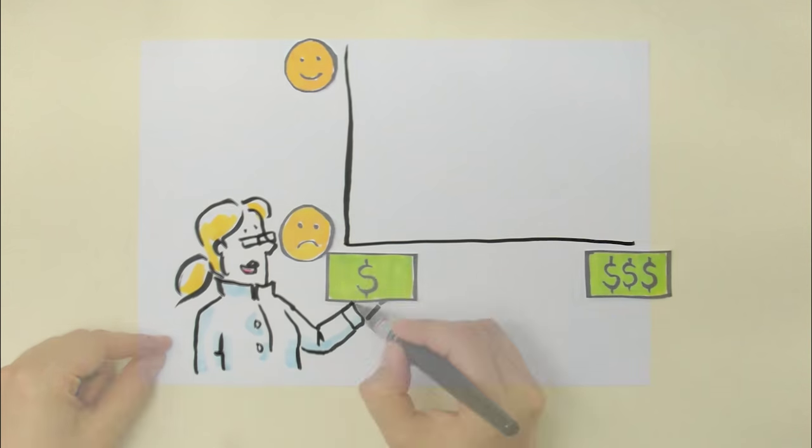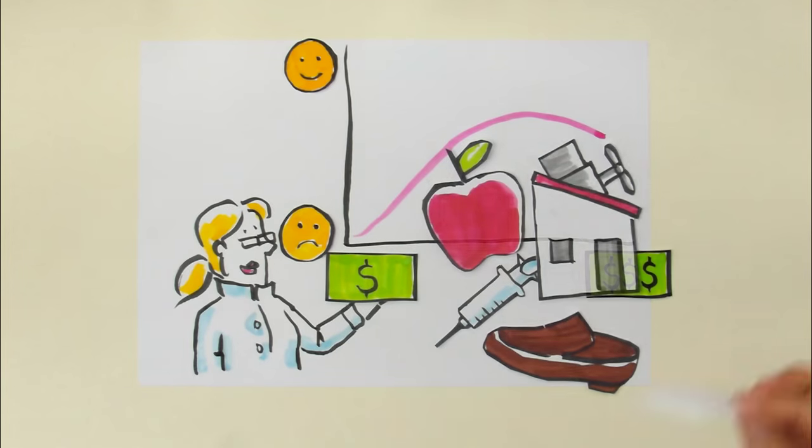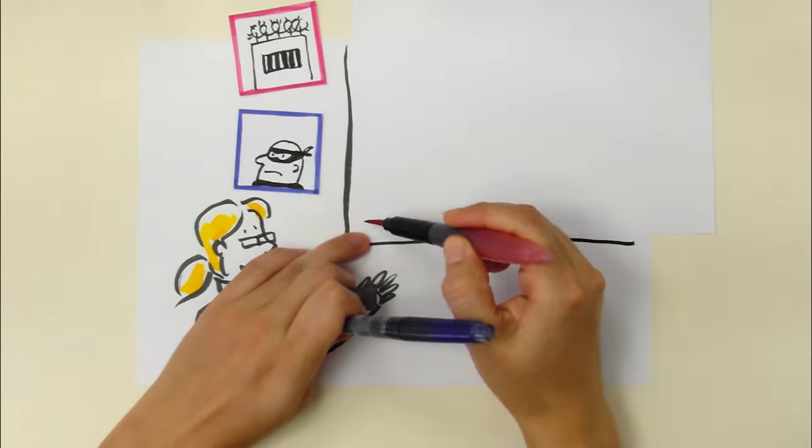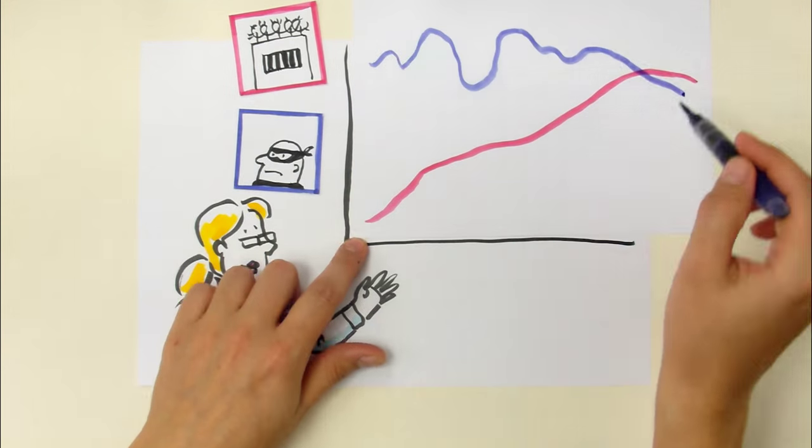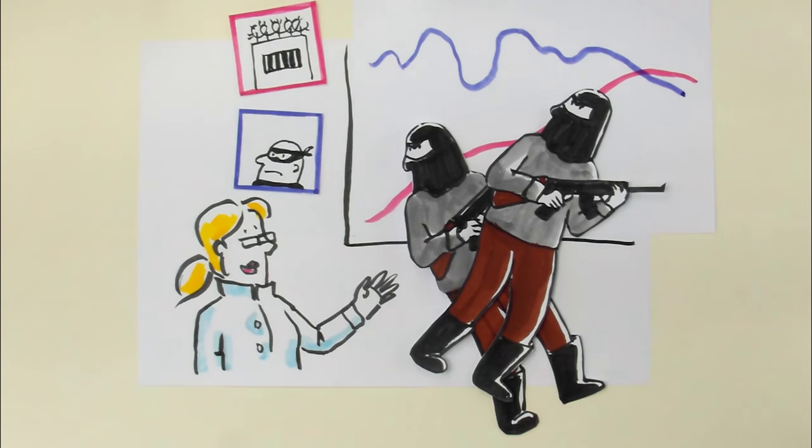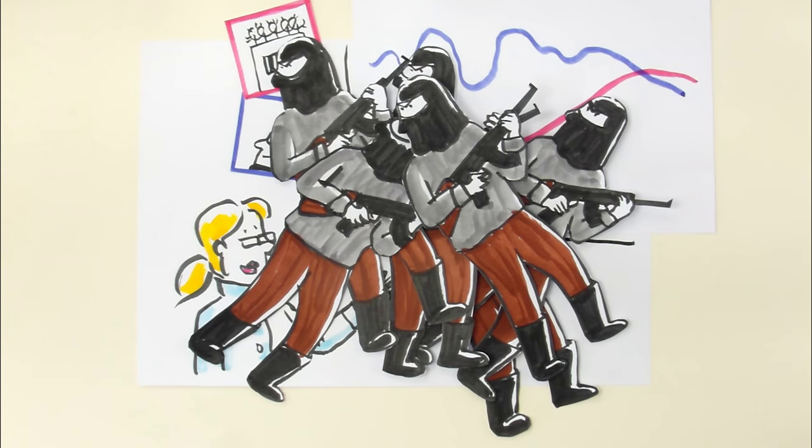Studies show that once people have the basics, wealth doesn't add to happiness but even reduces it. Also, huge incarceration rates eventually lead to more crime, and as a military commander in Iraq once said, we're making terrorists faster than we can kill them.